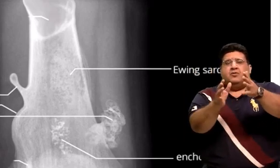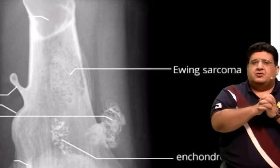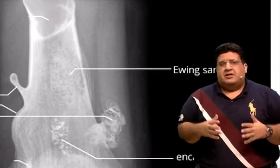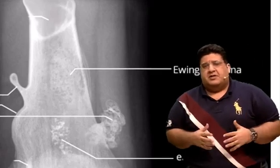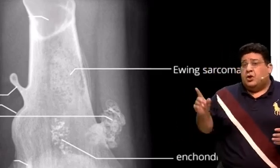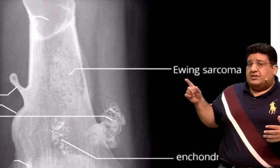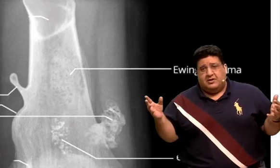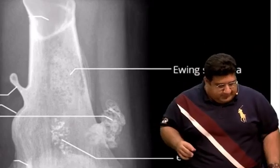On biopsy you will see small round cells positively staining. Immunohistochemistry will show CD99 marker positive. The ultimate gold standard is translocation 11;22. Ewing's sarcoma is the most chemosensitive and most radiosensitive bone tumor.